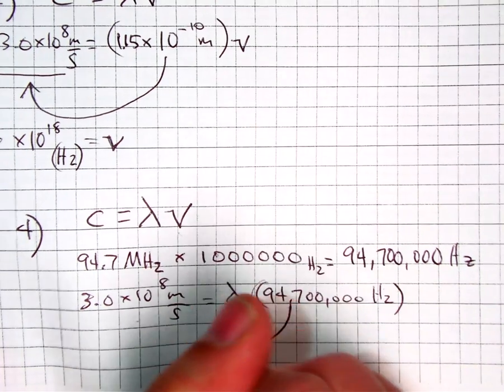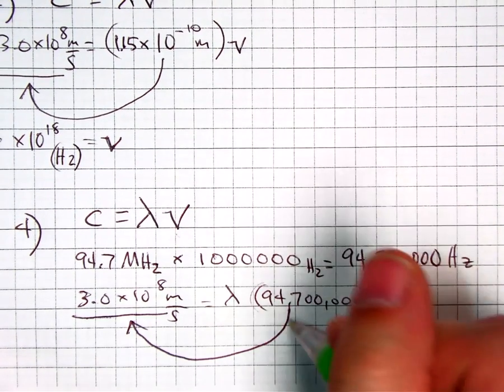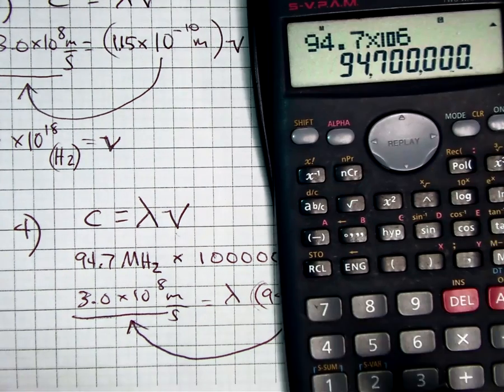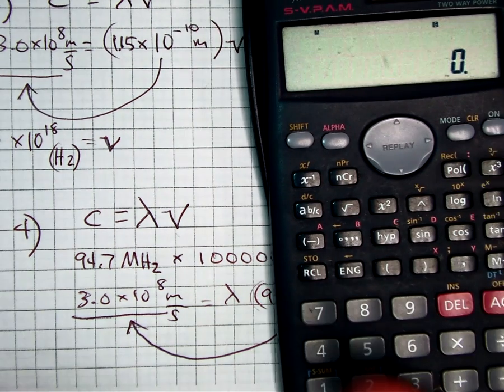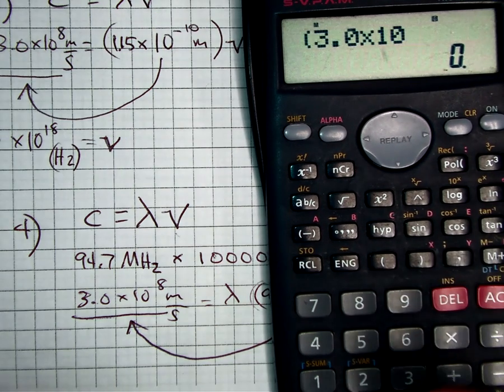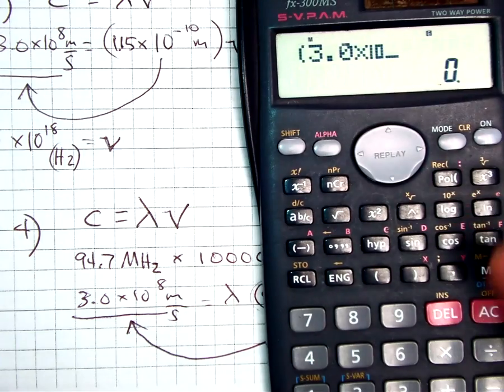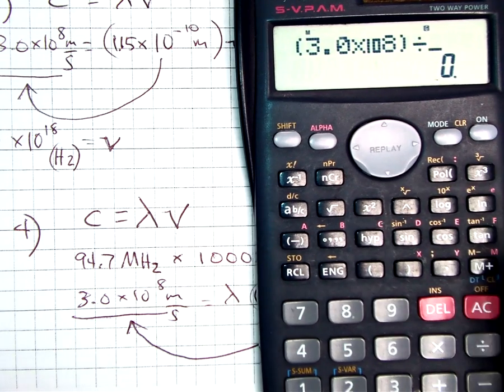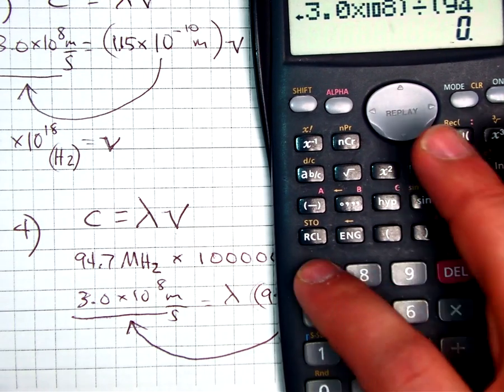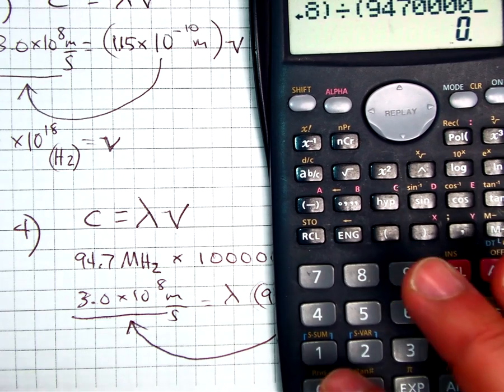Move this underneath that. And then it cancels off the right side. And again, we just have a division problem. So, we have, in this case, 3.0, once again, times 10 raised to the 8th, close parentheses, divided by, and then I have parentheses, 94,700,000.